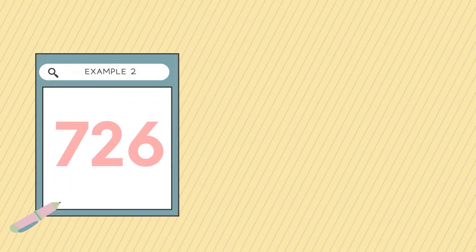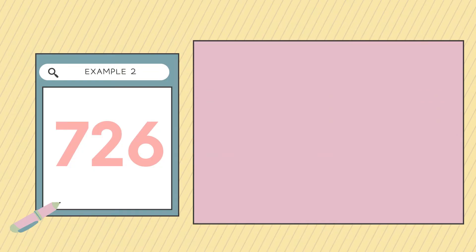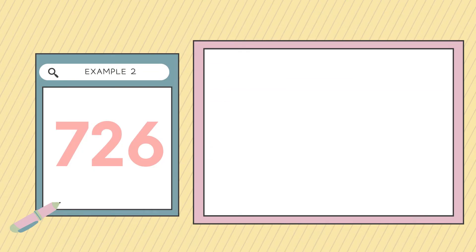Another example: 726. Let's check if 726 is divisible by 6. First, we're going to check if the number is divisible by 2. 726 ends with 6, and 6 is an even number. So 726 is divisible by 2. Next, we're going to check 726 if it is divisible by 3.